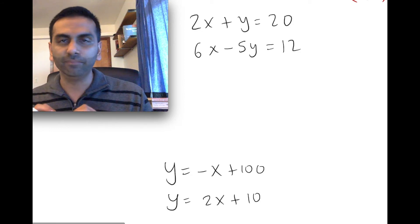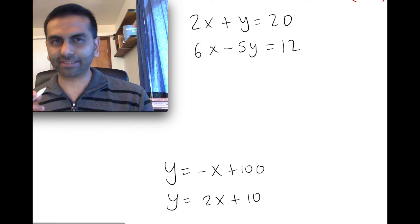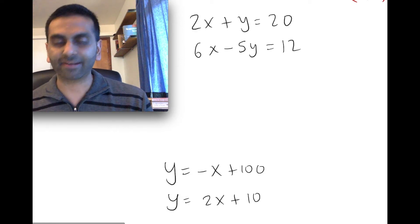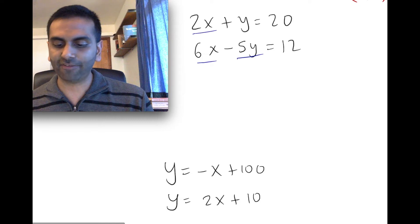Whichever one looks easier, pick one and solve for one of the variables. So here, the trick is to try to pick one without a coefficient in front of it if you can. So here, there's a 2x, 6x, -5y, but just a y here without anything in front of it.